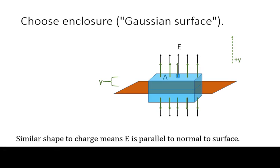Once again, we will use a Gaussian surface parallel to the geometry of the object. Note that the surface intersects the electric field both above and below the plane of the charge.